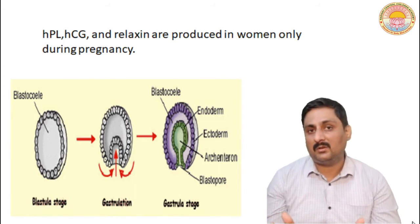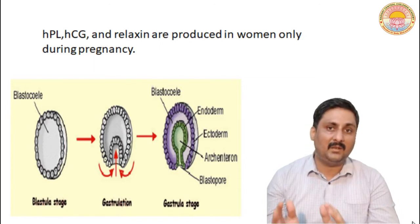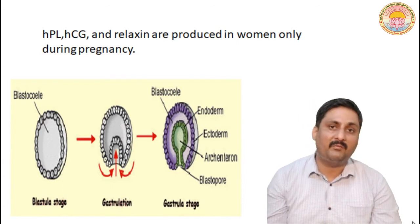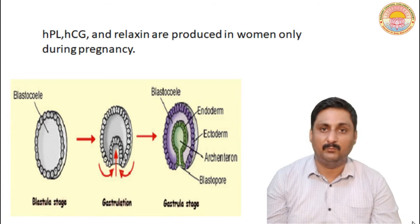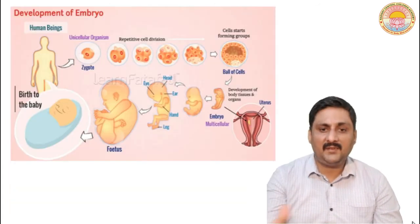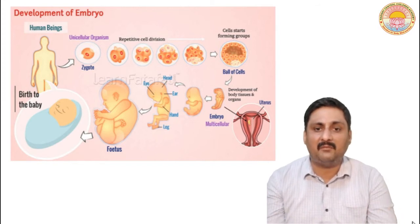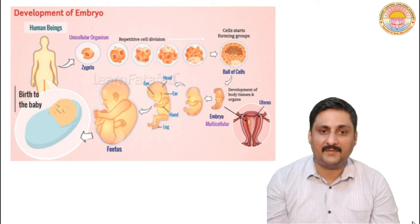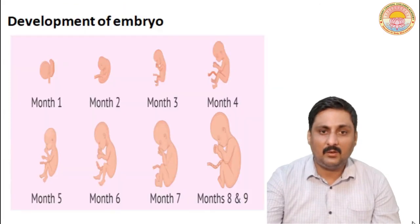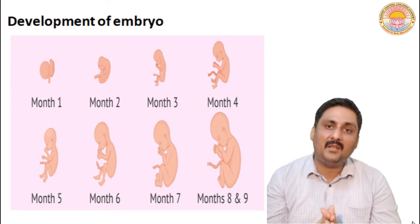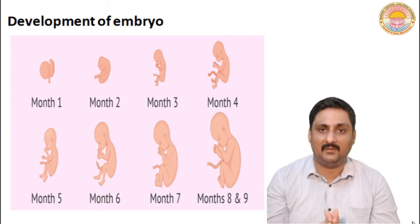The proper growth and correct metabolism of the mother is very essential for the proper growth of the child in the womb. This figure represents the development of the embryo inside the womb. The gestation period in the case of the human female is about 9 months.